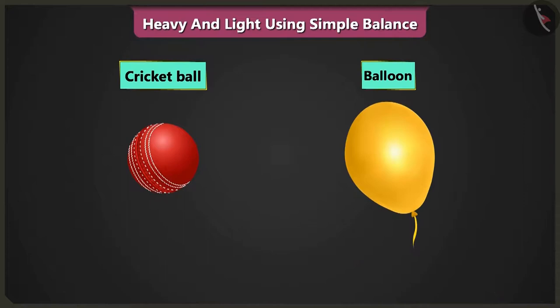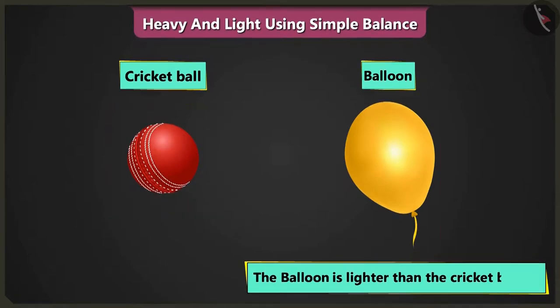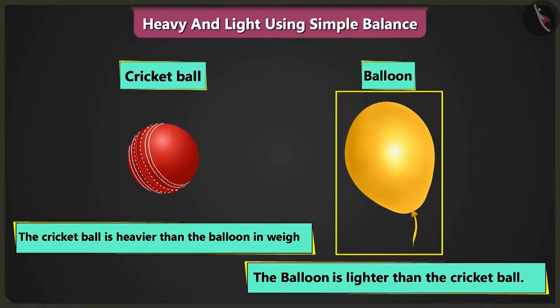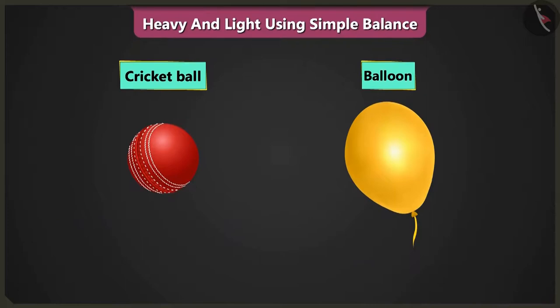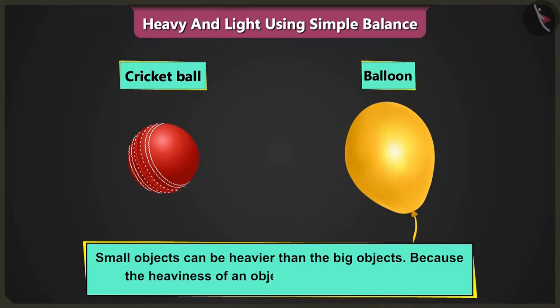Yes, but this balloon is lighter in weight than the cricket ball and the cricket ball is heavier in weight than the balloon. Rightly said, potato. Now do you understand? Even small objects can be heavier than the big objects because the heaviness of an object depends on its weight.